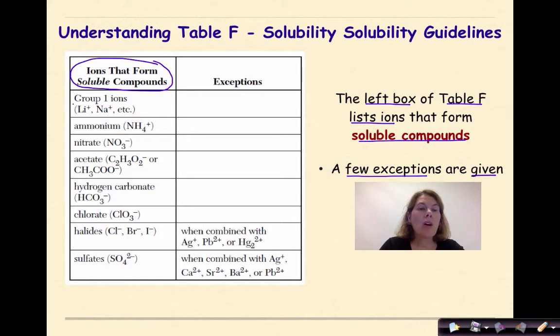This includes all group 1 ions, like lithium and sodium, ammonium—and be careful with ammonium, that's not ammonia. Ammonia is NH3, this is the ion ammonium. Acetate, whether you look at it as C2H3O2-1, or CH3COO-1, which is the more organic form. Hydrogen carbonate, HCO3-1. Chlorate, ClO3. Halides, Cl-1, Br-1, I-1. Or sulfate. So any of these ions, if they are found in a compound and they are placed in water, they will dissolve into mobile ions.